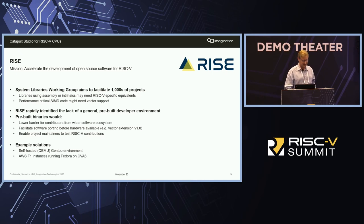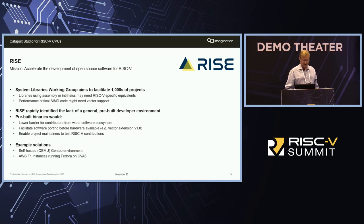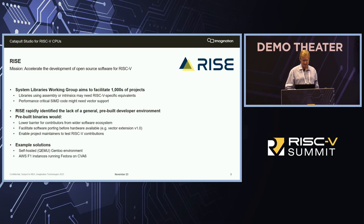Hopefully, you'll have heard of RISC-V — the RISC-V software ecosystem industry collaboration that Imagination Technologies is part of. One of its primary stated missions is to accelerate the development of open-source software for RISC-V. To give an example, the System Libraries Working Group within RISC-V aims to facilitate literally thousands of projects. Typically, libraries might have assembly or intrinsics in their current system supports, and they'll need RISC-V specific equivalents. Similarly, if there's performance-critical code written in C/intrinsics for something like NEON or SSE, that could need RISC-V vectorization.